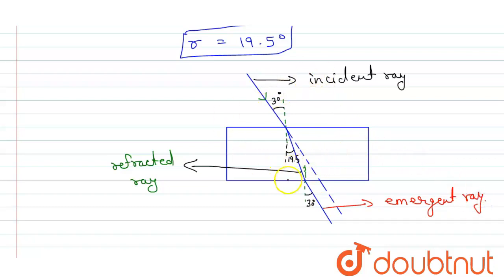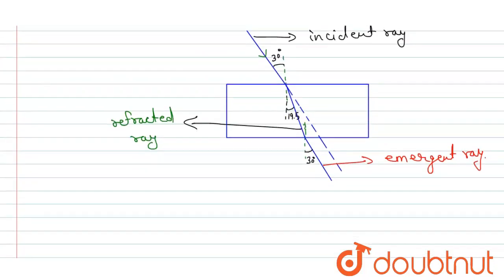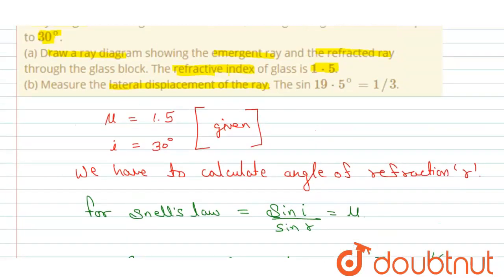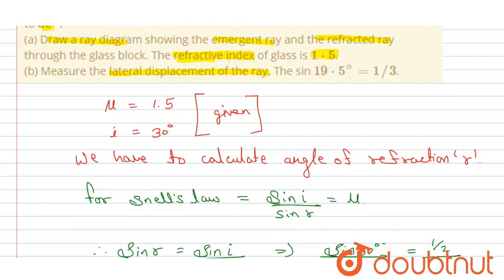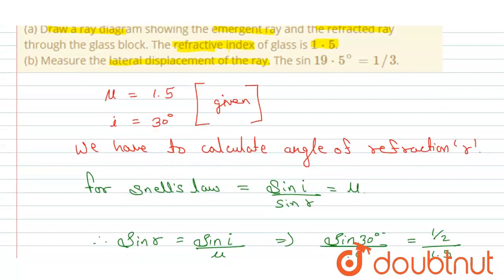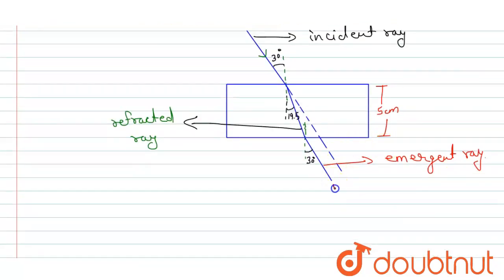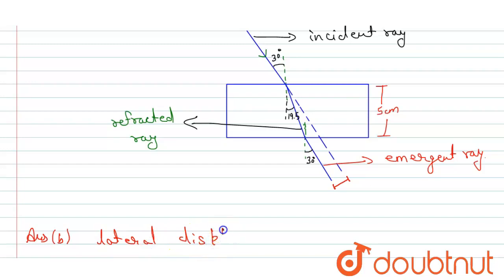This completes part A of the solution. The glass slab is 5 centimeters thick. For part B, we need to measure the lateral displacement of the light ray. The distance between the incident ray and the emergent ray is called the lateral displacement, and the answer is 1 centimeter.